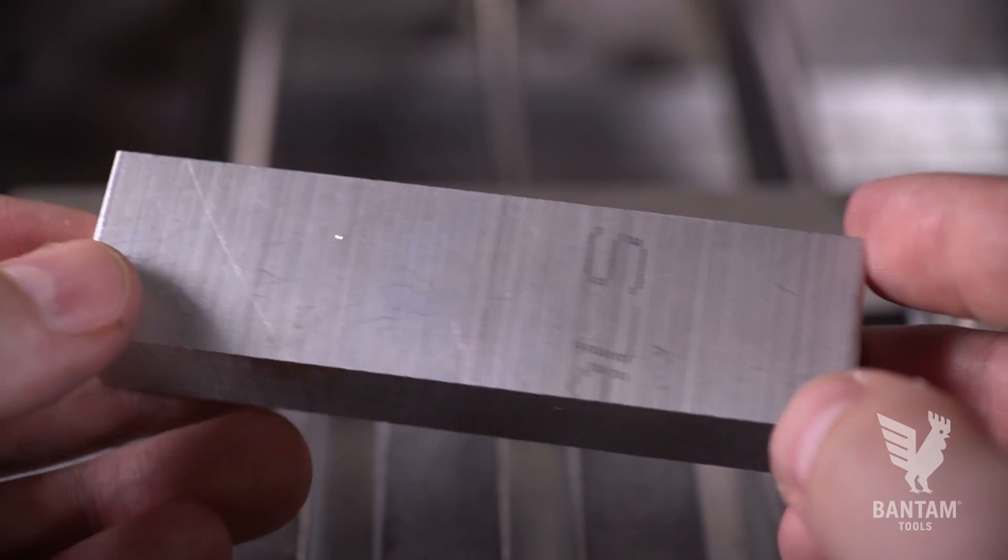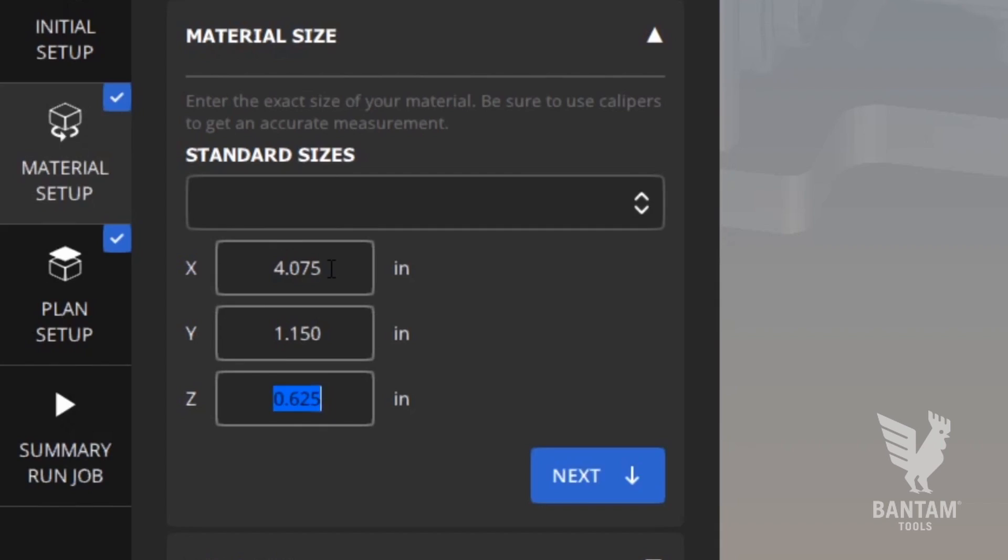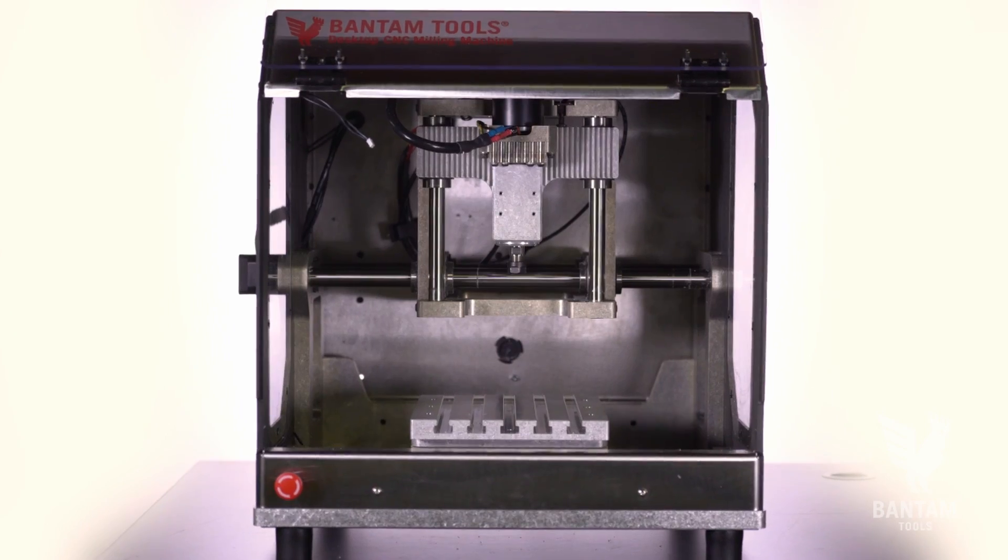Let's load the gcode file for the first operation in initial setup and select our tool. Measure our stock and then enter the material dimensions. Next, we'll load the stock into the machine.